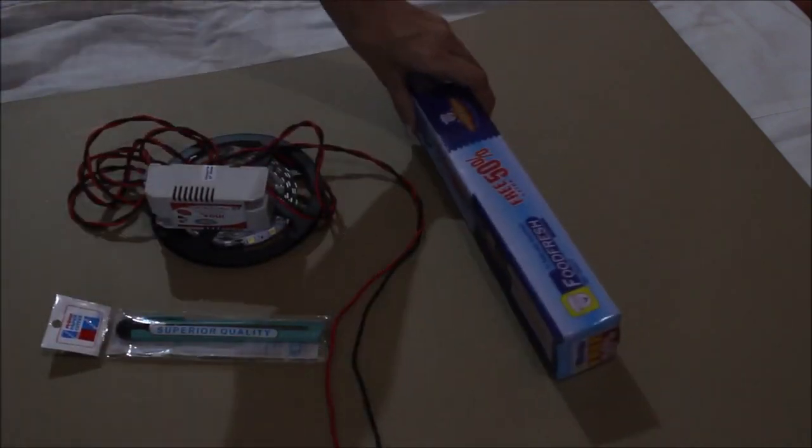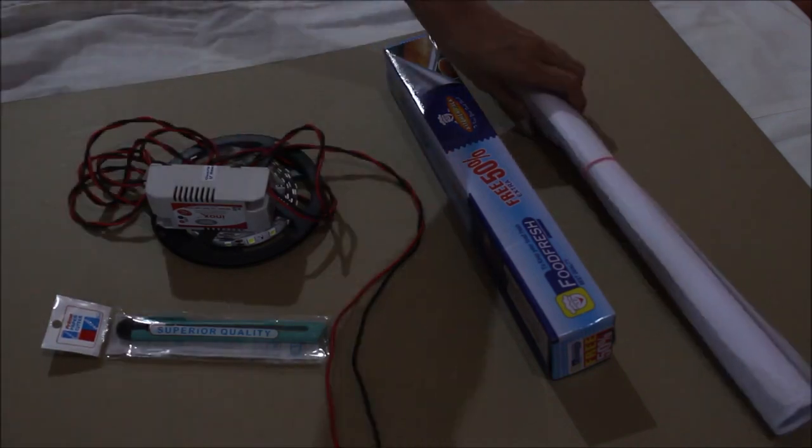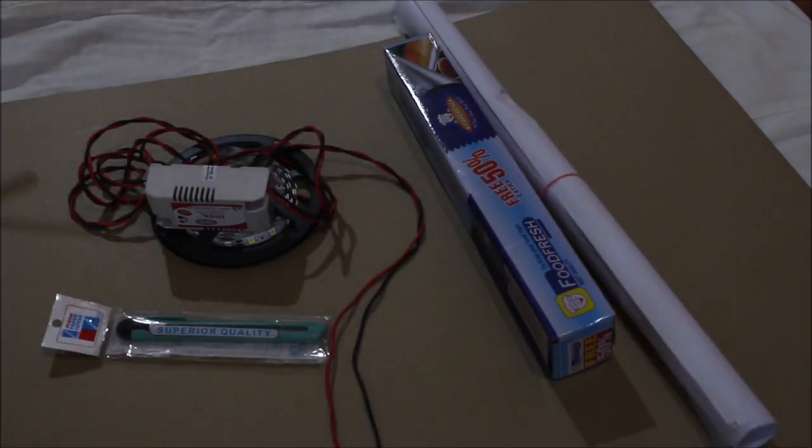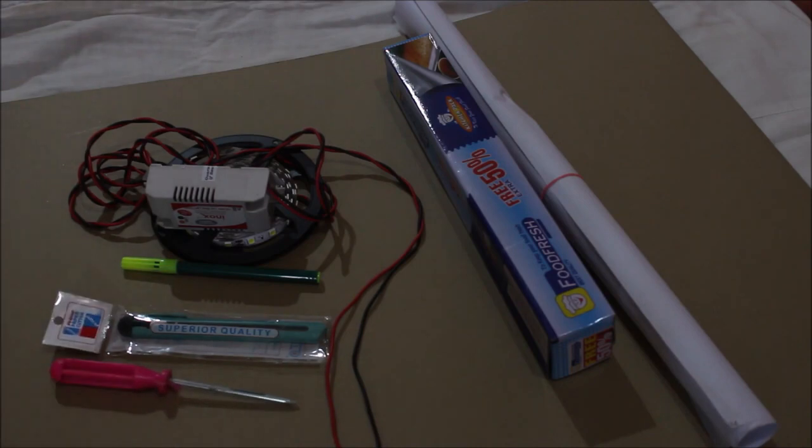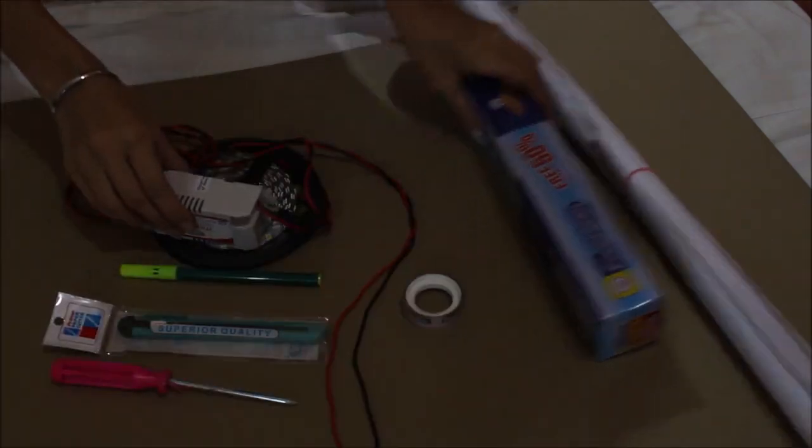So to make a ring light you need a cardboard sheet, a cutter, 5 meters LED light, silver foil, butter paper, sketch pen, screwdriver, tape, and Fevicol.